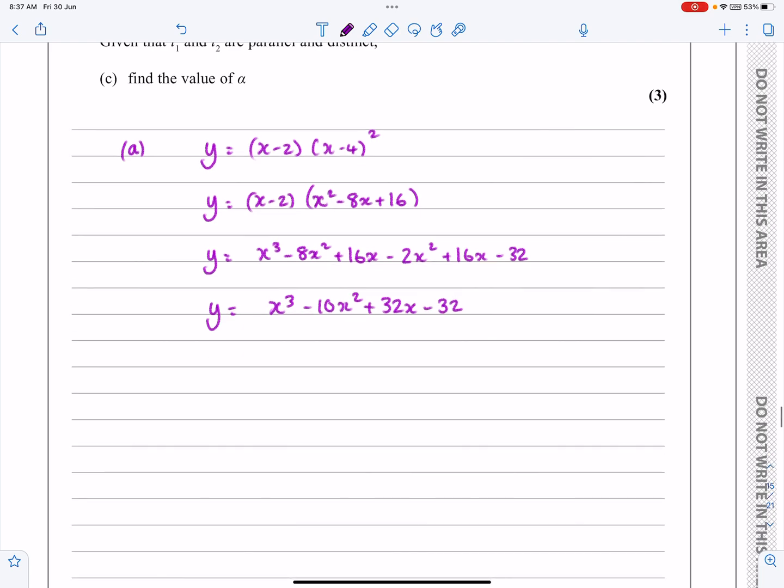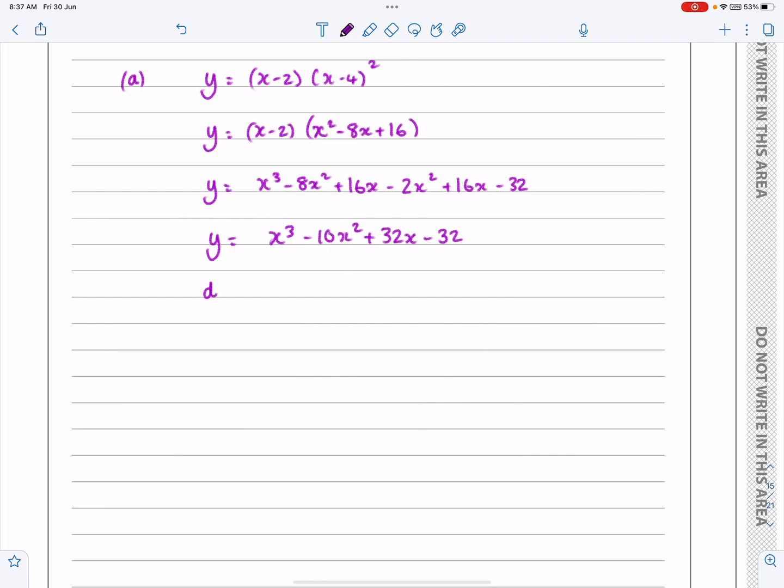What have we got? We've got x cubed. I think we've got minus 10x squared there, 32x there, and minus 32. Right, perfect. So now I've got it into a format of something that I can differentiate. I can just go through and differentiate. Multiply by the power, take one off the power, and so on.